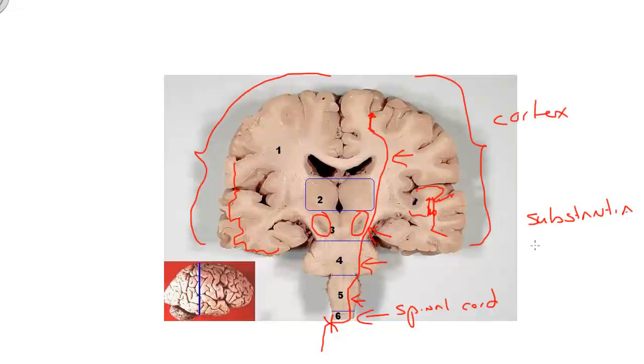Substantia nigra is a nucleus. It's a collection of cell bodies, and about half the cell bodies contain the neurotransmitter dopamine. And a side branch, the synthetic path that leads to dopamine leads to the reduction of melanin, and melanin pigment granules get trapped in those neurons.